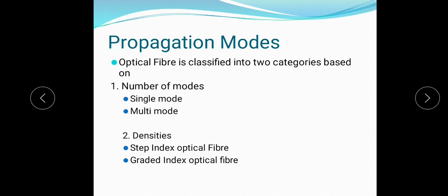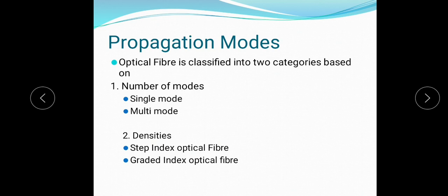The next part is propagation modes. Optical fiber is classified into two categories based on the number of modes: Single Mode and Multi Mode. Based on the density, it is classified as step index and graded index. In Single Mode, only one ray is transmitted; in Multi Mode, multiple rays are transferred.